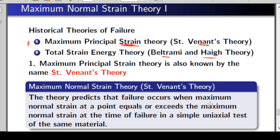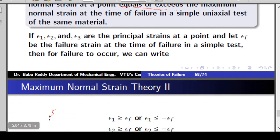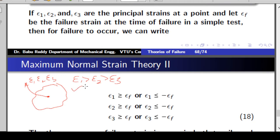This theory predicts that failure occurs when the maximum normal strain at a point equals or exceeds the maximum normal strain at the time of failure in a simple uniaxial test of the material. So, if I want to know whether a component has failed at some point, I measure the strains at that point — epsilon 1, epsilon 2, and epsilon 3 — arranged in decreasing order. If epsilon 1 (the maximum) crosses the failure strain, or if epsilon 3 (the minimum) is less than minus the failure strain, we say the component has failed.